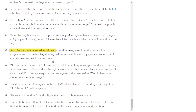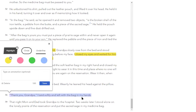'I kept the bag until my son, your mother's father, was a man and had to leave us to fight in the war across the ocean. I gave him the bag for I believed it would protect him in battle. But he did not take it with him — he was afraid he would lose it. He died in a faraway land.' Again grandpa was still, and I felt his grief around me. 'My son,' he went on after clearing his throat, 'you had no sons, only one daughter, your mother. So the medicine bag must be passed to you.' He unbuttoned his shirt, pulled out the leather pouch, and lifted it over his head. He held it in his hand, turning it over and over as if memorizing how it looked. In the bag, he said as he opened it and removed two objects, is the broken shell of the iron kettle, a pebble from the butte, and a piece of the sacred sage. He held the pouch upside down and fine dust drifted out. 'After the bag is yours, you must put a piece of prairie sage within and never open it again until you pass it on to your son.' He replaced the pebble and the piece of iron and tied the bag. I stood up, somehow knowing I should.